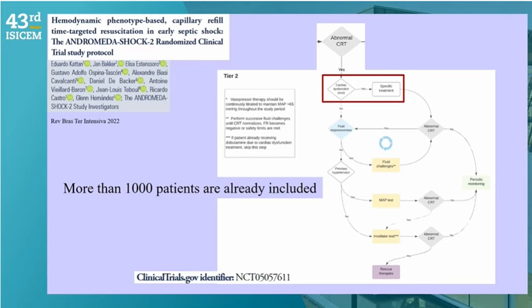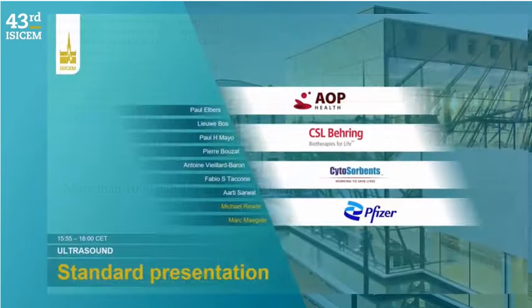For advanced critical care echocardiography: 40-hour courses, 100 supervised transthoracic echos, 30 supervised TEEs, and certification are required. This is why the EDEC — European Diploma in Advanced Critical Care Echocardiography — was created in 2015 under the European Society of Intensive Care Medicine. The Andromeda Shock 2 trial, with over a thousand patients already included, may in one to two years provide important results on whether echo-guided therapy improves outcomes in septic shock. Thank you.